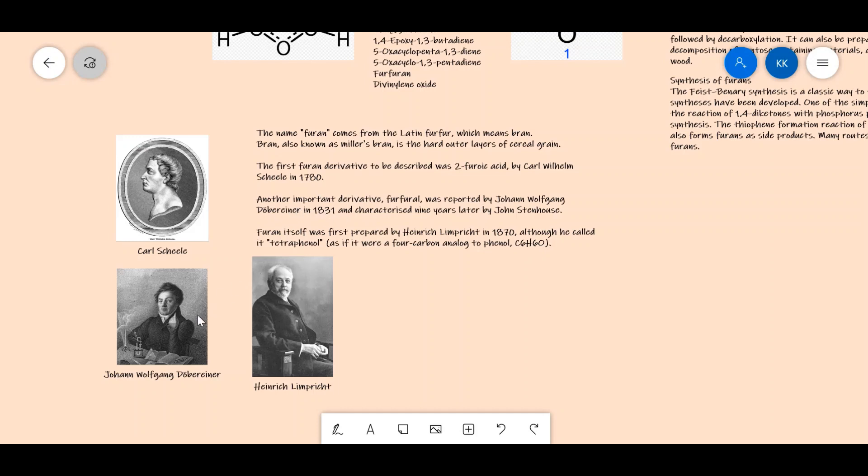Another important derivative of furan was reported by John Wolfgang Döbereiner in 1831 and characterized nine years later by John Stenhouse. Furan itself was first prepared by Heinrich Limpricht in 1870, although he called it tetraphenol because the phenol compound was known and this was a four-carbon analog.